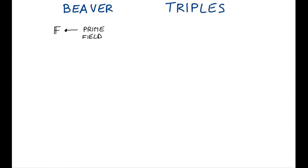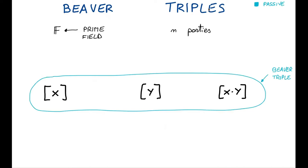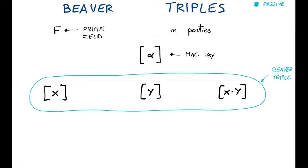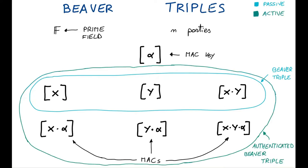We are working over a large prime field F, and suppose that n is the number of parties. A beaver triple is a random tuple of secret-shared elements: we have x and y that are uniformly random over the field, and then we have a secret sharing of their product, where the square brackets denote additive secret sharing among the n parties. A beaver triple allows us only to achieve passive security, but SPEEDS wants active security. So the construction introduces a MAC key alpha that is uniformly distributed over the field and secret shared among the n parties. Alpha is used to authenticate all the beaver triples by introducing MACs: x times alpha, y times alpha, and x times y times alpha. The union of the beaver triple with its MACs is called an authenticated beaver triple.